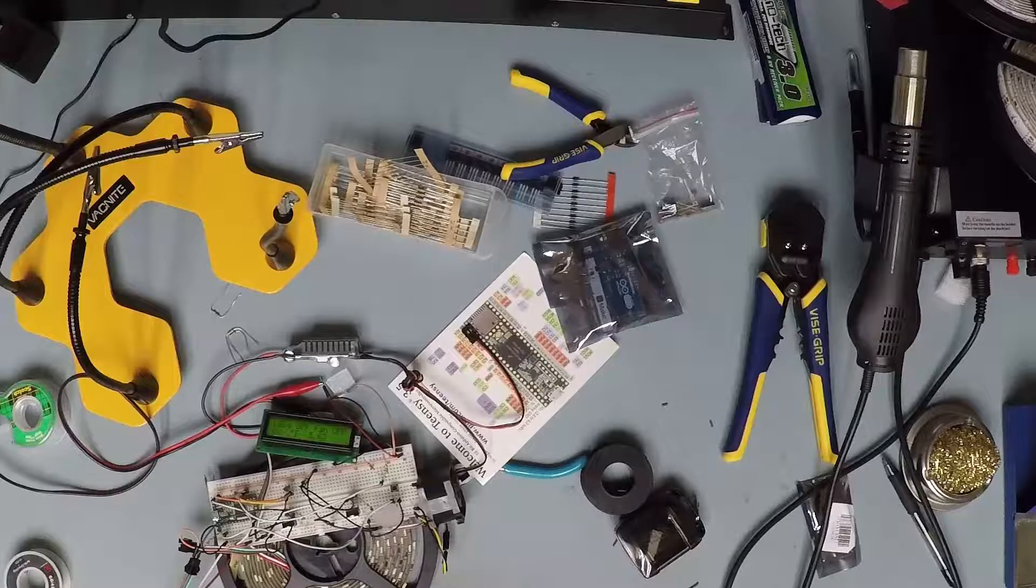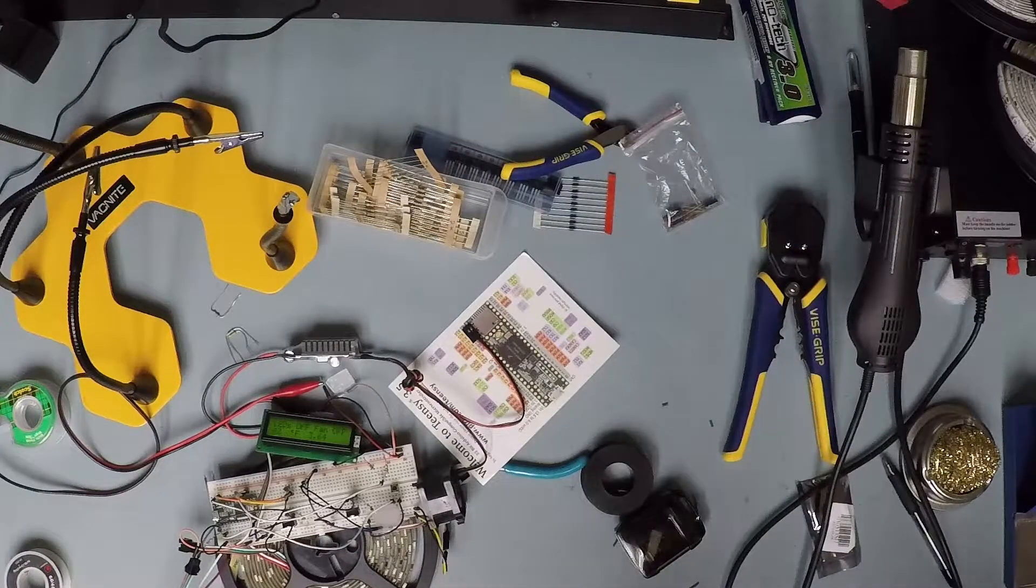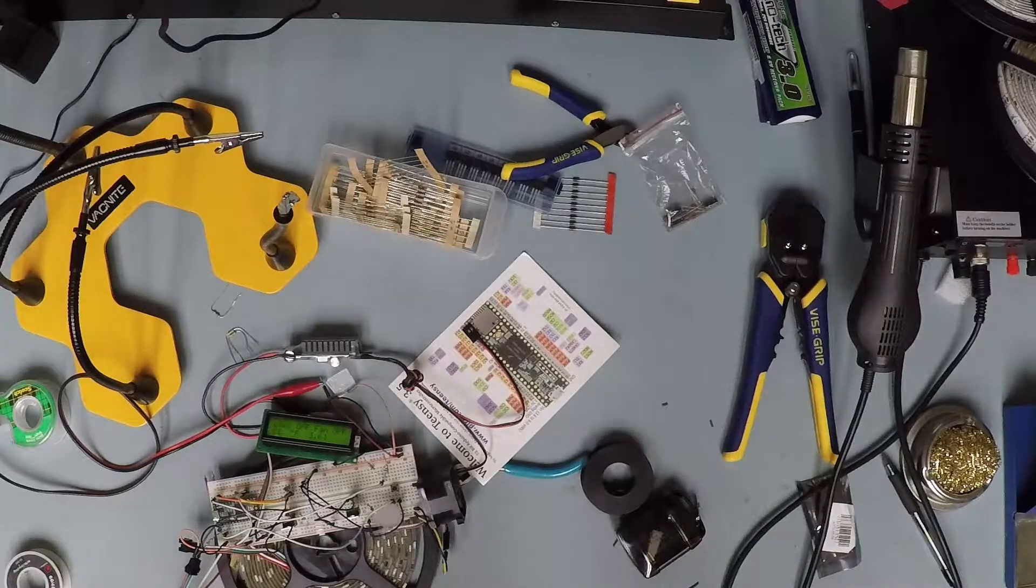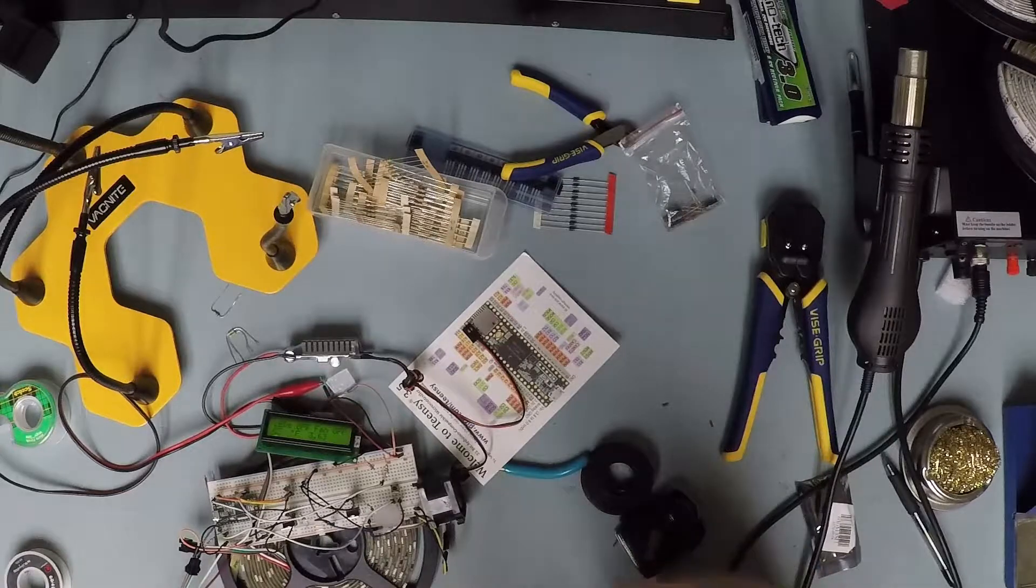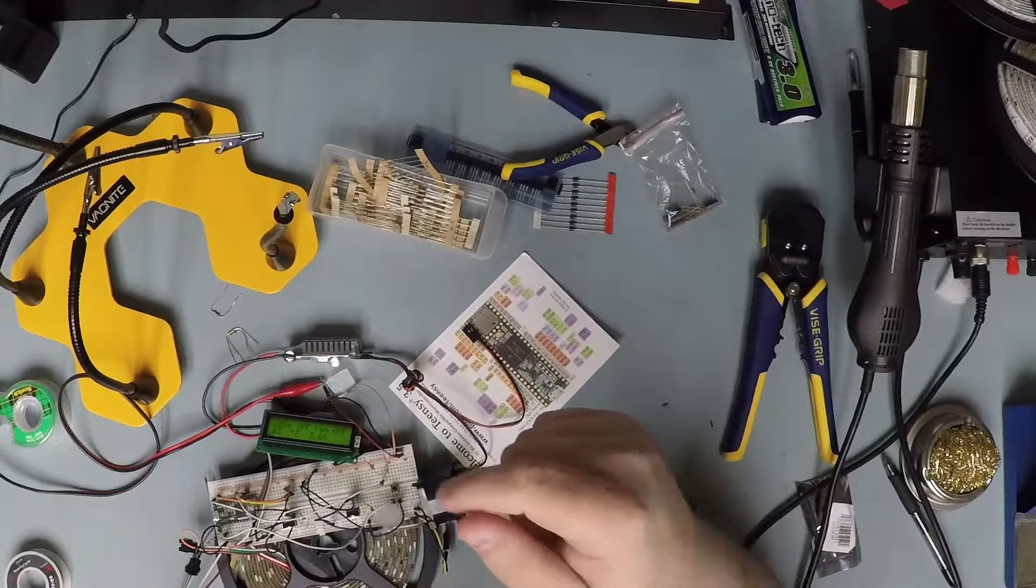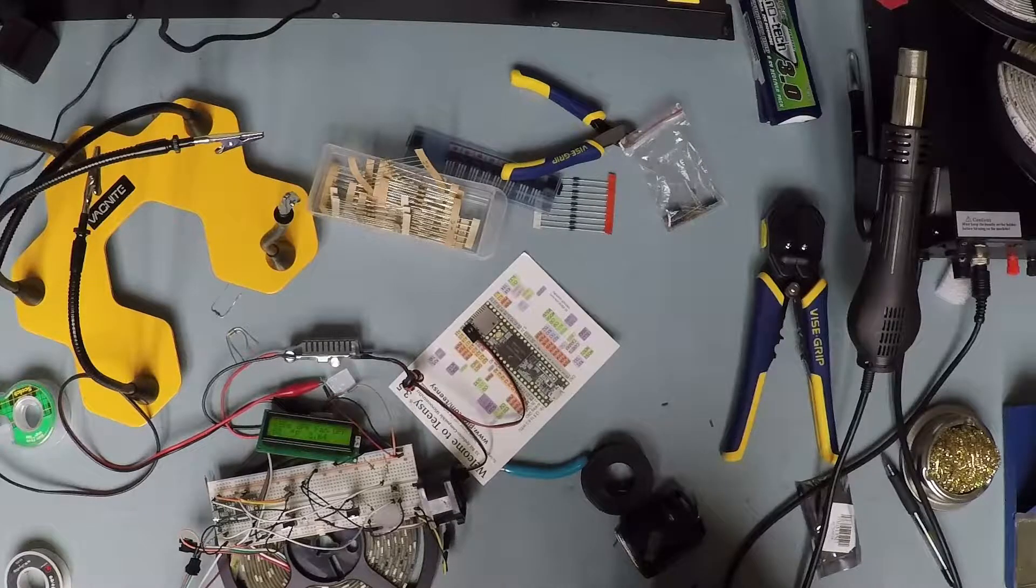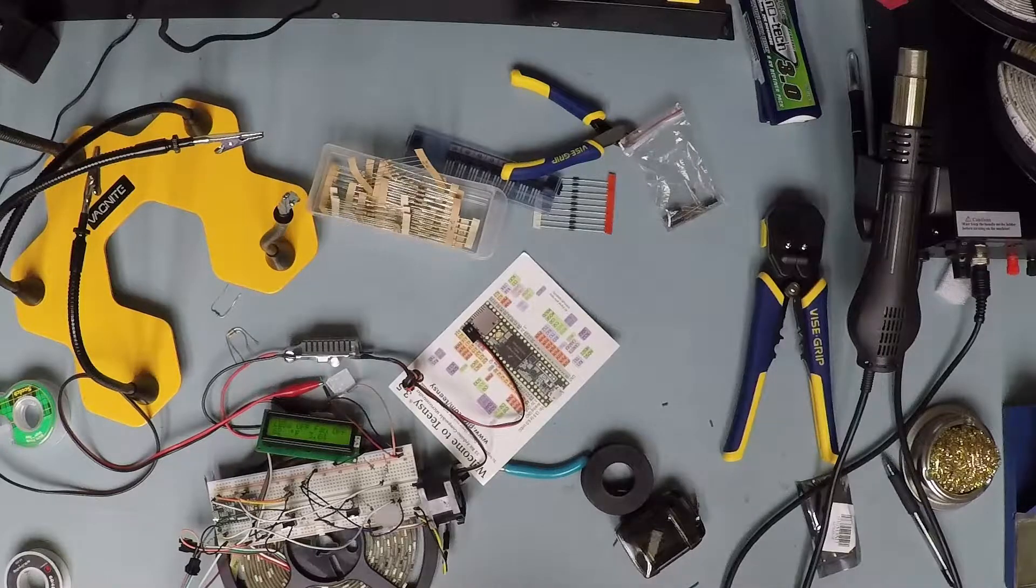All right we are back and as you can see things look a bit of a mess here. Ran into a couple issues. First of all, that capacitor divider network I was using did not work for shit. The values were all over the place when I tried to do the analog read on that.